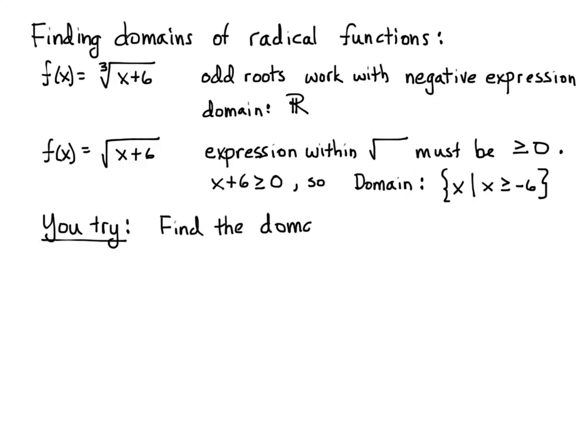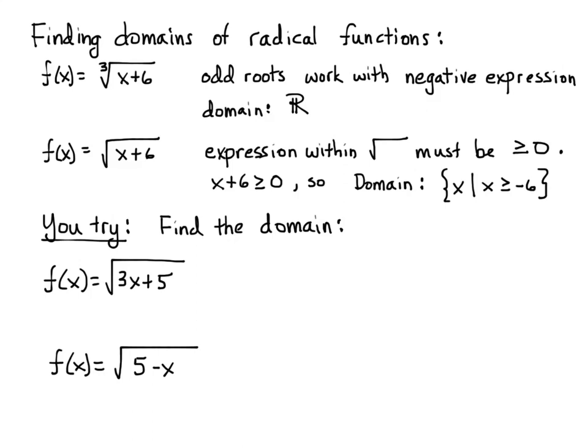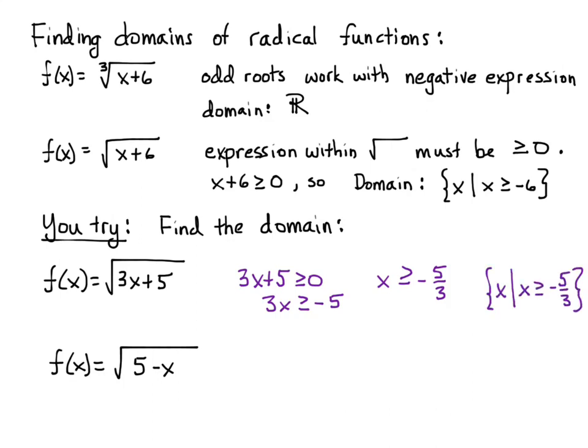For the first practice problem, x is greater than or equal to negative 5 over 3. You set 3x+5 greater than or equal to zero and solve for x. In set-builder notation you write: the set of x such that x is greater than or equal to negative five-thirds, and the closing brace acts as the period of that sentence.